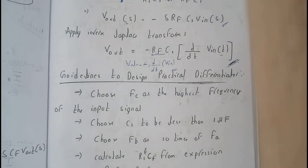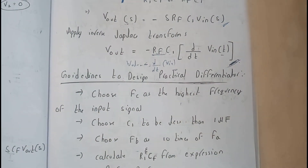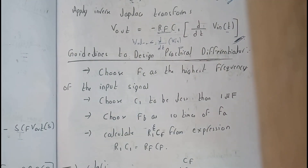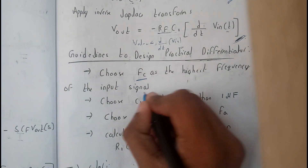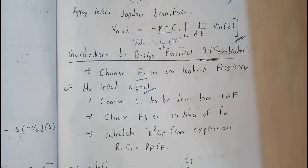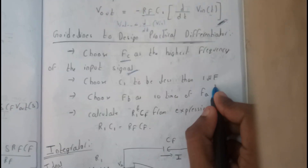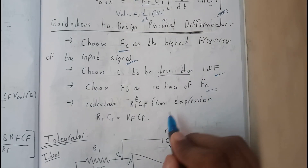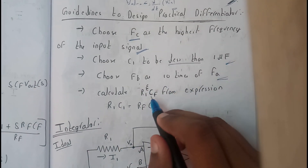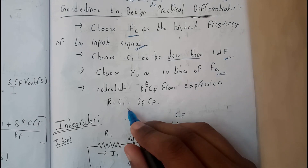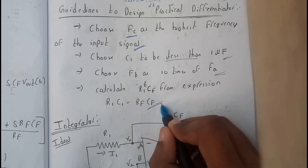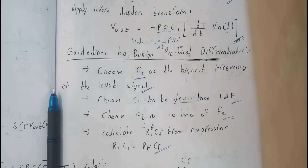There are some basic design guidelines for constructing this differentiator. Choose the frequency FA as the highest frequency of the input signal. Choose C1 to be less than 1 nF. Choose FB as 10 times FA. Calculate R1 and Rf from the expression R1·C1 = Rf·Cf. In the next video, we'll be going through the integrator. Thanks for watching.